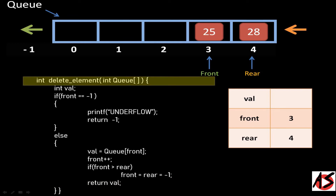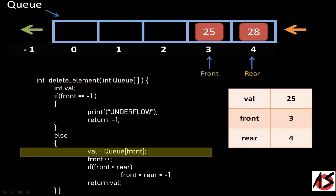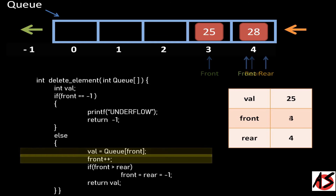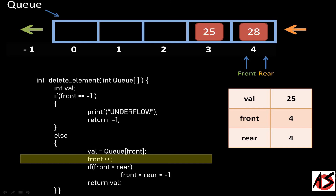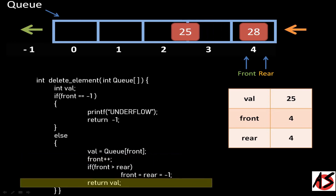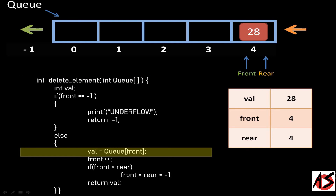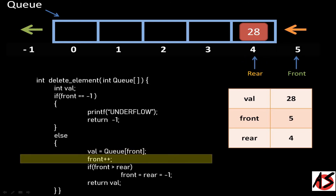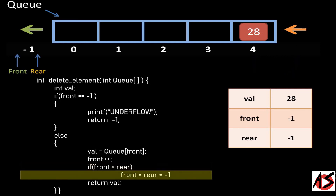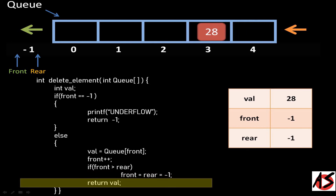Now we want to delete more elements from the Queue. Since the first condition is false, control moves to the else part and the element at the third index is copied into val. The front is incremented by 1 to 4. Since front greater than rear is false, the function returns and element 25 is deleted. We want to delete one more element; the first condition is false, control moves to the else part and the element at the fourth index is copied into val. The front is incremented by 1 to 5. Now the condition front greater than rear is true, so front and rear are both reset to minus 1, and element 50 is deleted from the Queue.